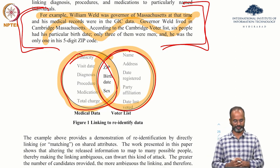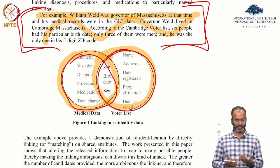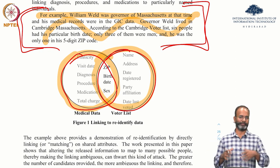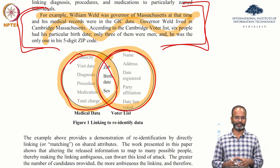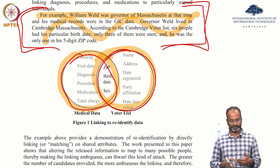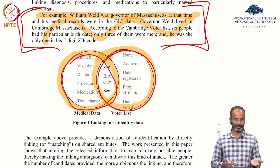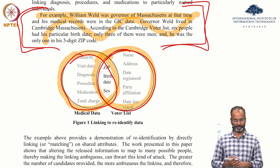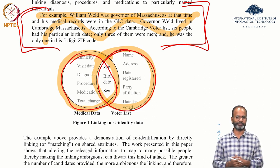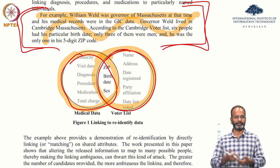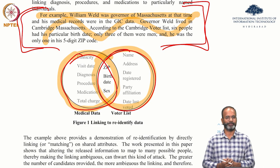This work became very attractive because of one paragraph about Governor William Weld of Massachusetts, whose medical records were in the GIC data. According to the Cambridge voter list, six people had his particular birth date, only three of them were men, and he was the only one in his five-digit zip code. The argument: if you're the only female student taking this class sitting in a particular zip code in Chennai or Hyderabad, it is very evident that it's just you.